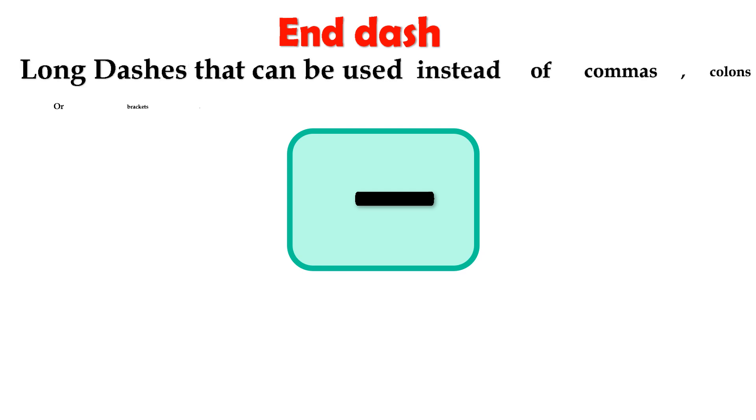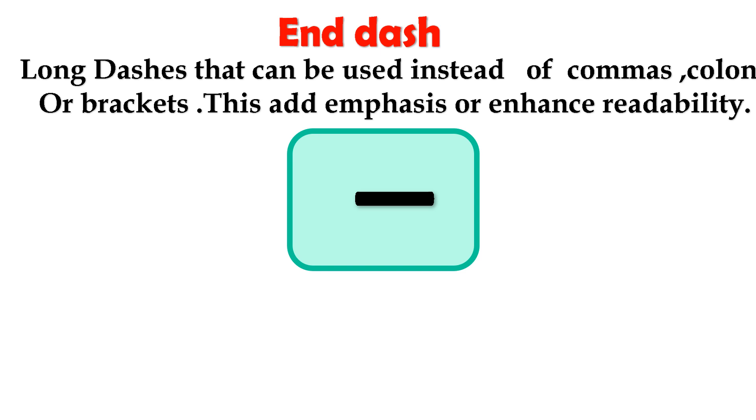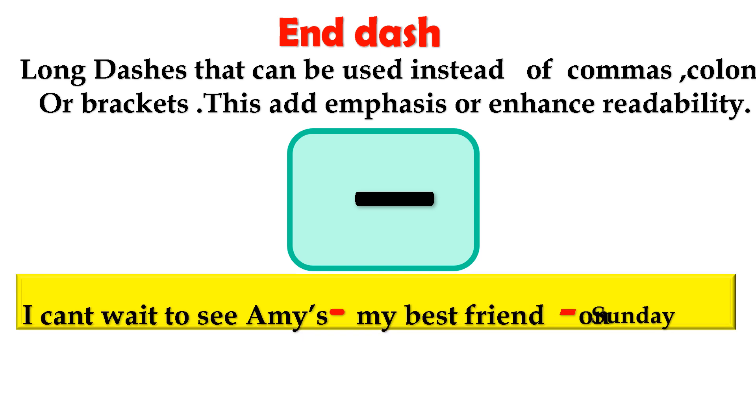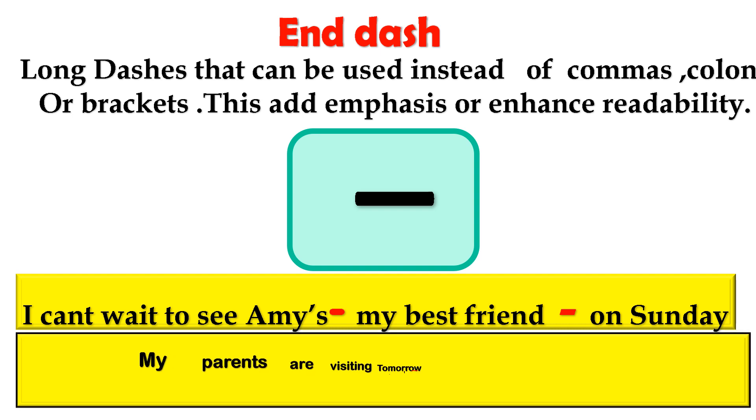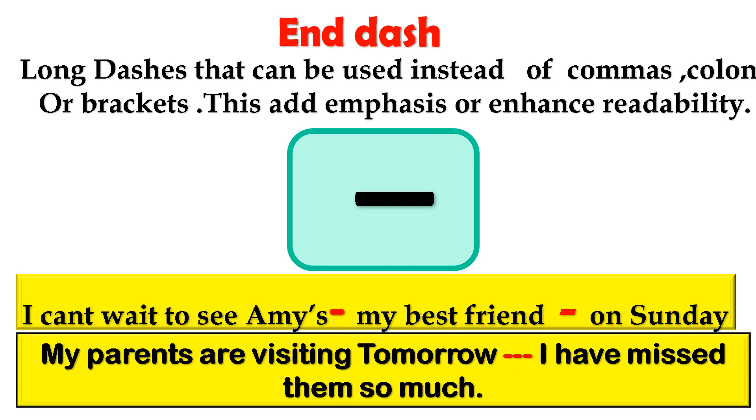Em dash. An em dash is a long dash that can be used instead of a comma, colon, or bracket. This adds emphasis or enhances readability. For example, I can't wait to see Amy—my best friend—on Sunday. My parents are visiting tomorrow—I have missed them so much.